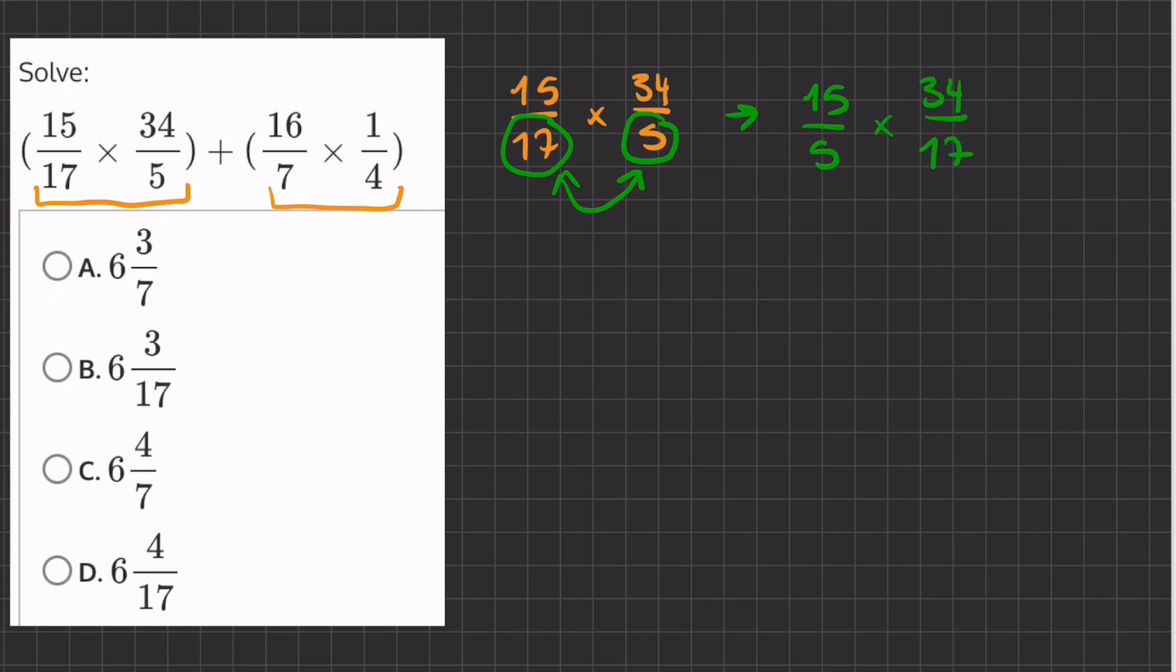So now this equation will turn into 15 over 5 times 34 over 17. Now these two fractions, if we simplify them, 15 divided by 5 is 3 and 34 divided by 17 is 2. So our answer will be 6 for this equation.